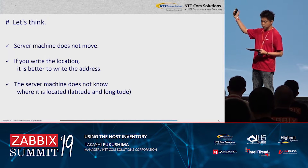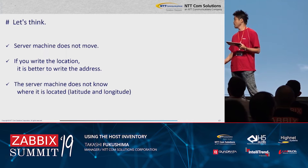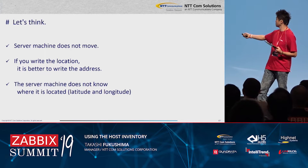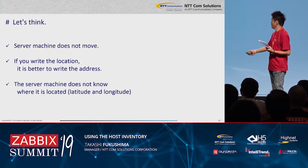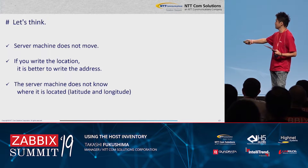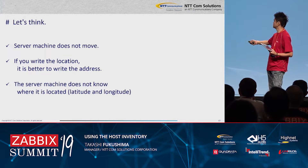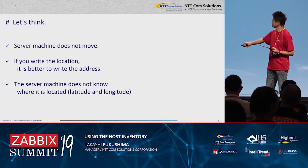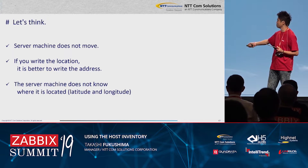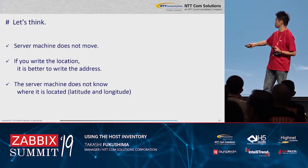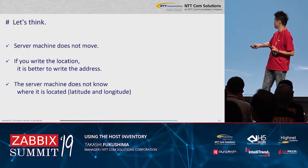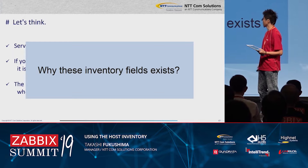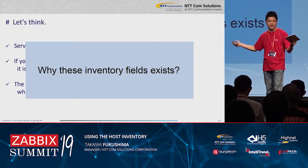Let's think about this. Server machines do not move. So if you write the location, it is better to write the address. The server machine does not know where it is located. So latitude and longitude — why do these inventory fields exist?